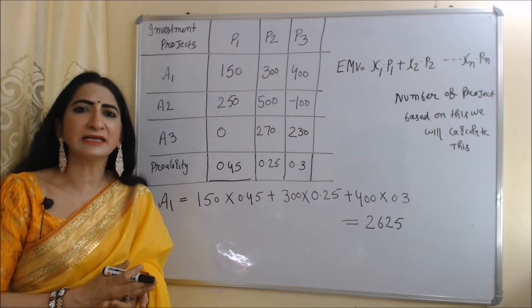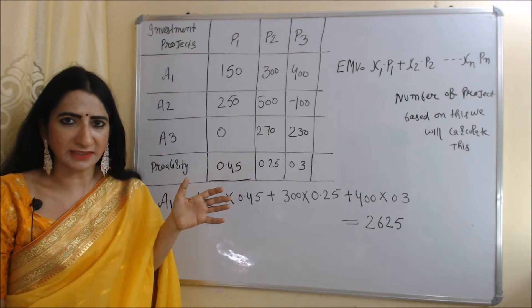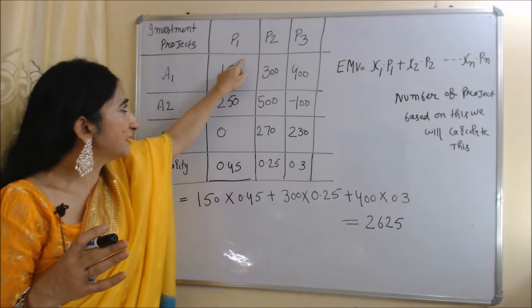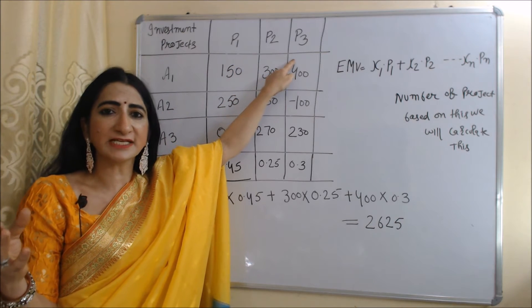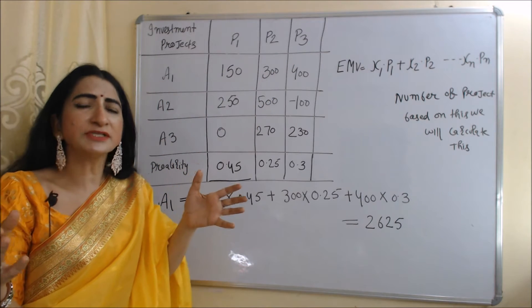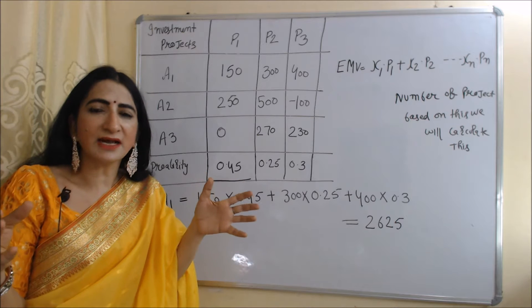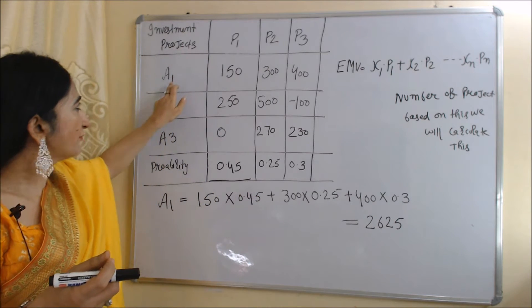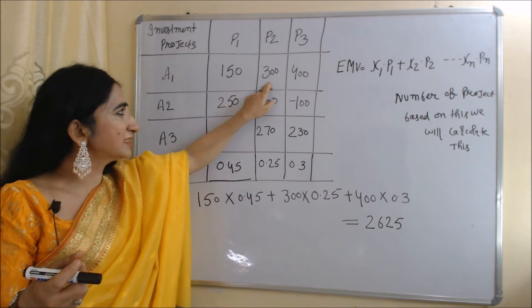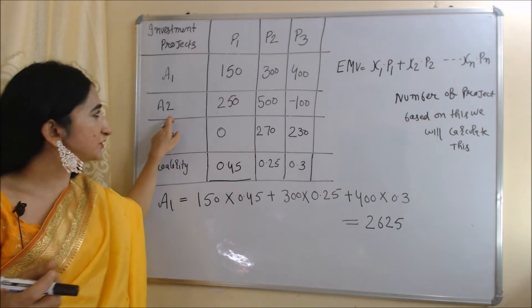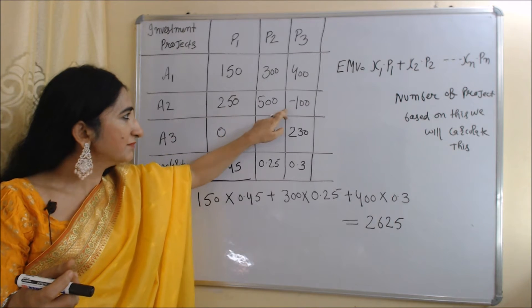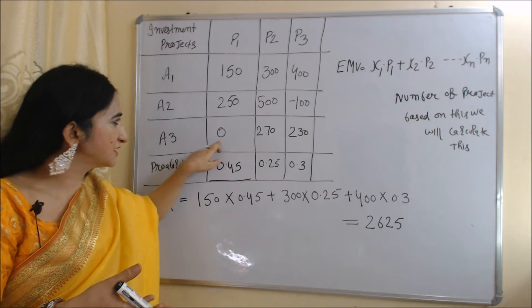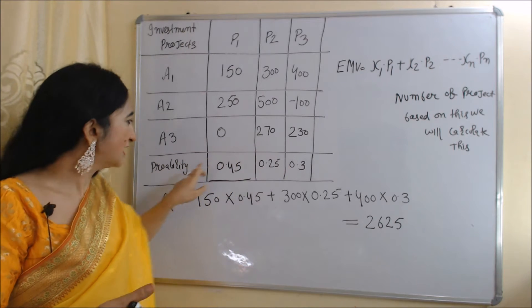With the help of this numerical example, we will clearly understand how to make a decision under uncertainty. Here we have different investment project options A1, A2, and A3. P1, P2, and P3 are the expected payoffs — or the expected outcomes — from each investment project. We use 'expected' because we are making decisions under uncertainty; we estimate outcomes based on some factors. The expected payoffs from A1 are 150, 300, and 400. The expected outcomes from A2 are 250, 500, and minus 100 — meaning we expect a negative outcome. The expected payoffs from A3 are 0, 270, and 230.